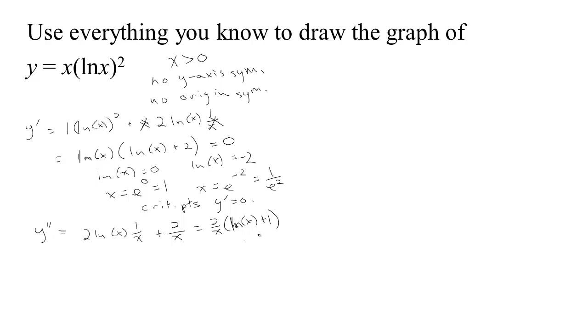So we can see the second derivative is going to change sign when ln x is equal to negative 1, and that says that negative 1 is the exponent you put on e to get x, so the second derivative is going to change sign at 1 over e.